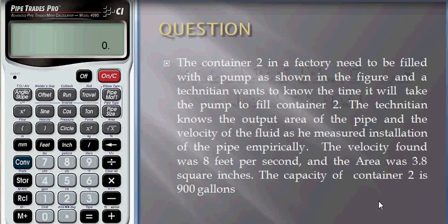The velocity found was 8 feet per second and the area was 3.8 square inches. The capacity of container 2 is 900 gallons.